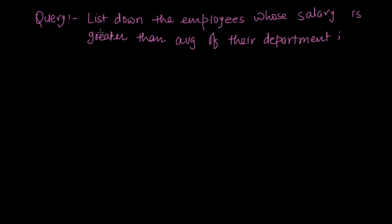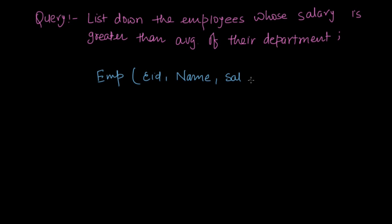Let's see an example to understand this. Consider the query where we have to list all employees whose salary is greater than the average salary of their department. We have a relation Employee with attributes: eid, name, salary, and department.